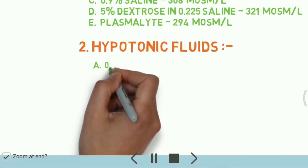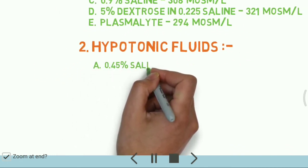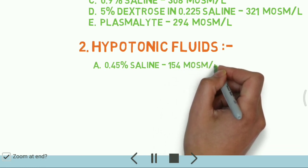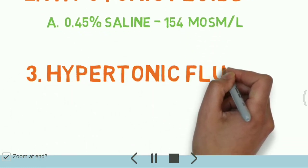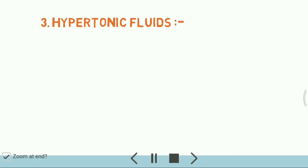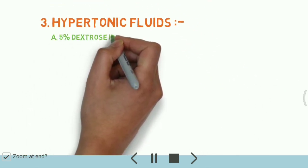Now hypotonic fluids: 0.45% saline has osmolarity 154 milliosmoles per liter. And for hypotonic fluids, 5% dextrose in 0.45% saline: 500 milliosmoles per liter.